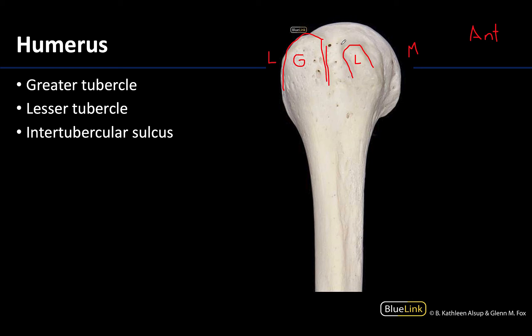Between the two tubercles you have the intertubercular sulcus, sometimes referred to as the bicipital groove. Muscles attach here — specifically the latissimus dorsi attaches on the floor of the intertubercular sulcus, with others attaching along the lips. But really this sulcus serves as a protected passage for the tendon of the long head of the biceps. A ligament runs across this area to keep that tendon down, preventing bow-stringing during certain movements and protecting that long head tendon.